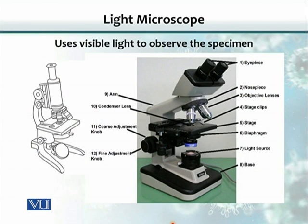A light microscope is not called 'light' because it does not weigh much. It is because it uses light as a source of illumination, and that is the reason we call it a light microscope. As you can see here, there are various parts.